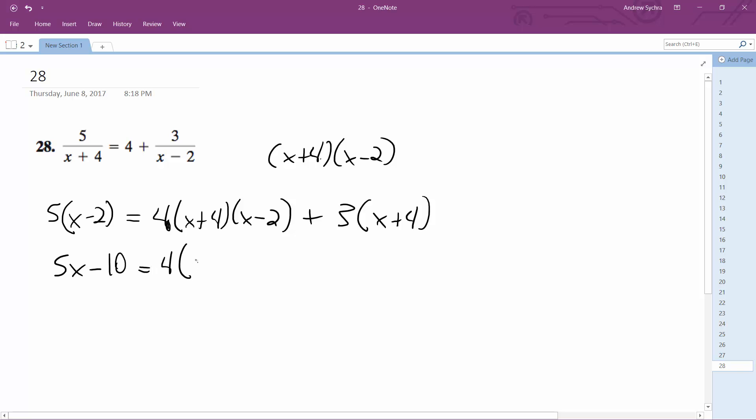this becomes x squared minus 2x plus 4x minus 8 plus 3x plus 12. Alright, so 5x minus 10